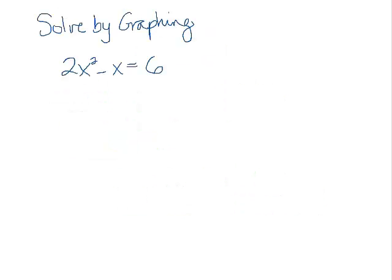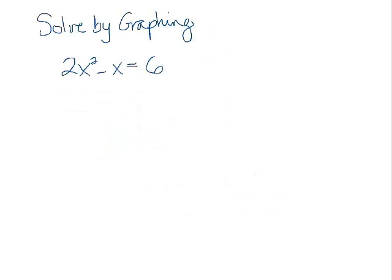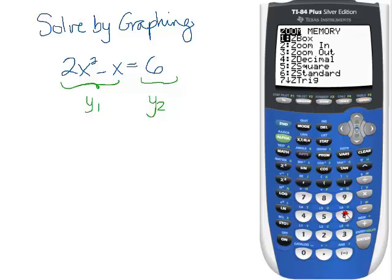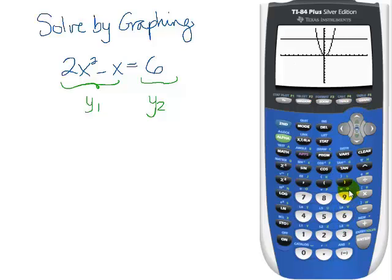Let's try the first one. Let's solve this by graphing. We could simply graph the 2x squared minus x as one function. We could graph the 6 as our second function. Let's do that right now. So I've already entered in y1 and y2. I'd like to find a nice window where I can see this intersection.